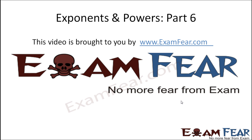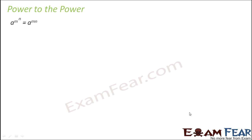Hello friends, this video on exponents and powers part 6 is brought to you by examfear.com — no more fear from exam. Now let's look at the next category which is power to the power. When you have a number a to the power m, which in itself has a power, and you put another power to this number — that is (a^m)^n — these two powers get multiplied. So this is equal to a to the power mn.